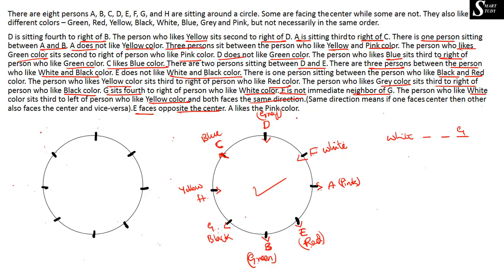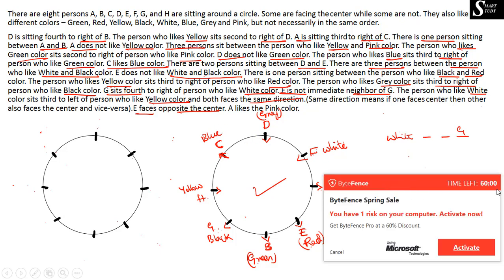The last information: A likes the pink color. This is a direct statement. We have already substituted pink color for A, so this information confirms what was already placed — it was not additionally required but it is consistent.